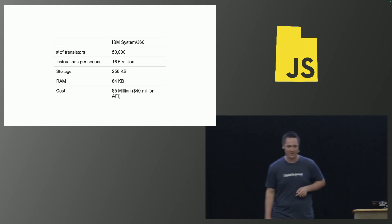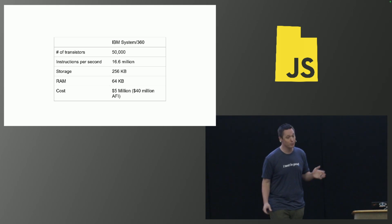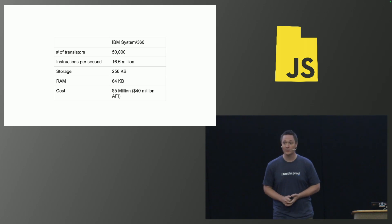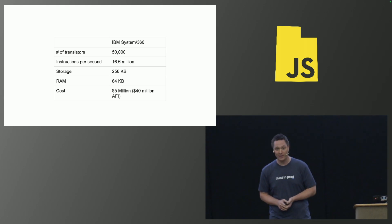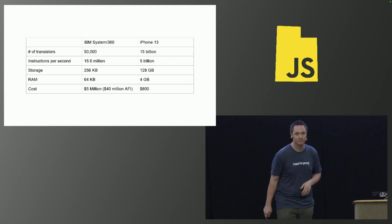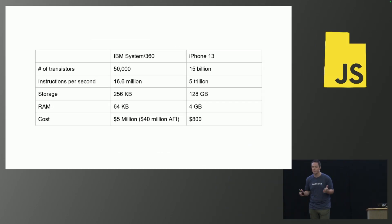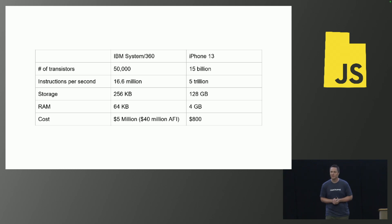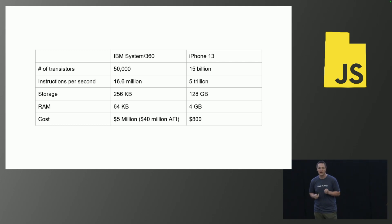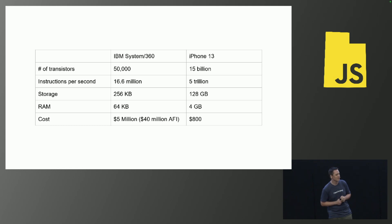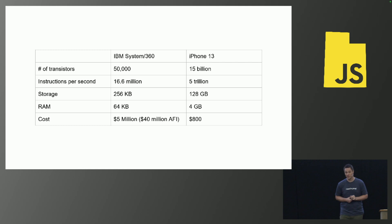That's when you could buy this thing. And at the time it was pretty impressive, but it would cost you $5 million to buy, which if you adjust for inflation is $40 million today. And if you compare that to the iPhone 13, it's actually quite incredible what has happened in the last 50 years. We have an iPhone 13 that has so much more performance than this top-of-the-line server, and it only costs $800 compared to the $40 million that this other one would cost you.